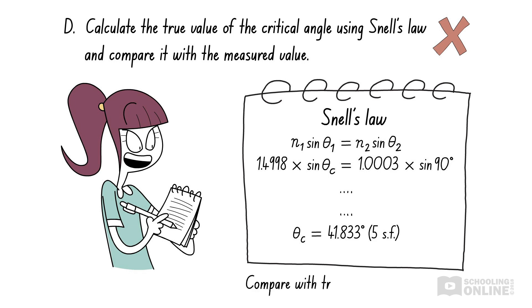If she were to calculate the true value for the critical angle and compare it to her measured value, she would be able to assess the accuracy of her results. As we mentioned before, accuracy and reliability are different concepts. Since she has only performed the experiment once, her results are unreliable, regardless of whether they are accurate or inaccurate. Therefore, knowing the true value for the critical angle does not improve reliability, so option D is incorrect.